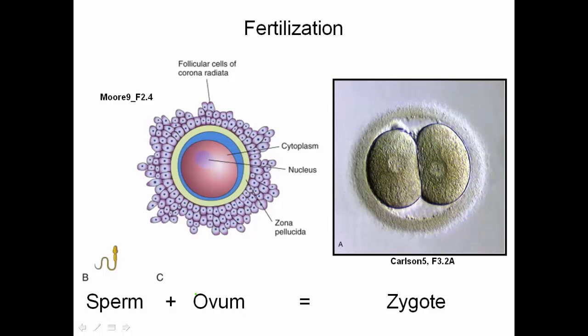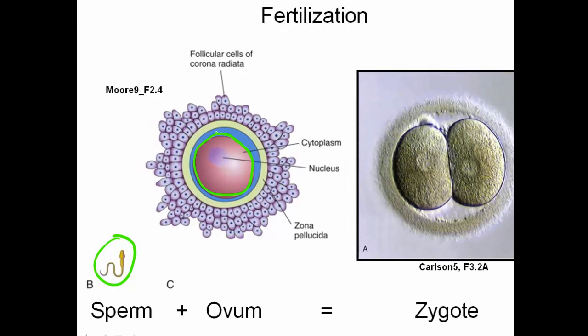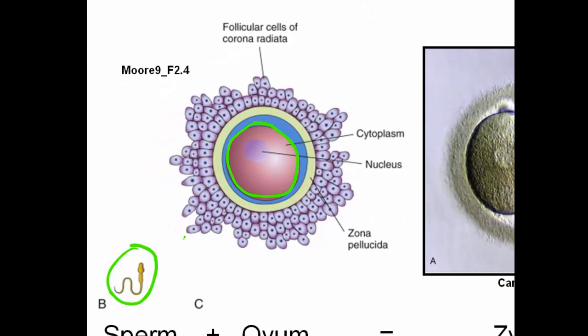Fertilization occurs when a sperm from a male unites with an oocyte or ovum from a female. At this point, a zygote or fertilized egg is formed. In order for the sperm to gain access to the ovum, it needs to fight its way through a few layers before making contact.